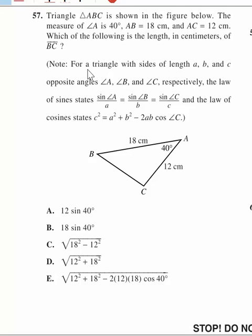Okay, triangle ABC is shown in the figure below. The measurement of angle A is 40 degrees, AB equals 18 centimeters, and AC equals 12 centimeters. Which of the following is the length in centimeters of BC?